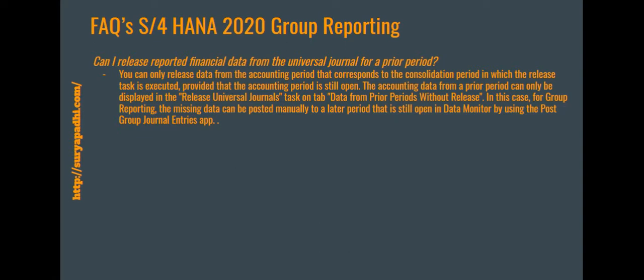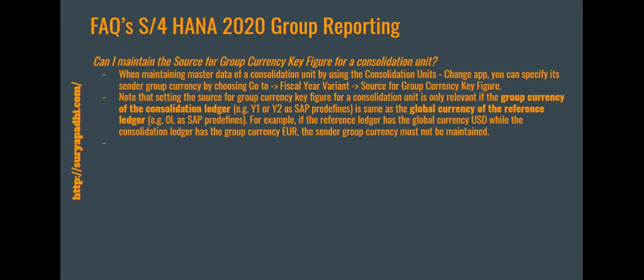The next question is: can I release reported financial data from the Universal Journal for a prior period? The answer is no. When you are trying to release data from the Universal Journal, you are releasing for a particular period, and the data will be released from the Universal Journal only for the particular period you have selected in the data monitor.